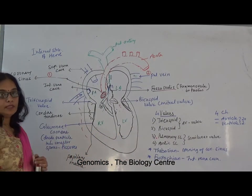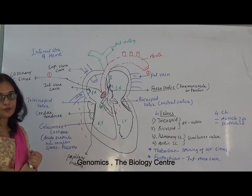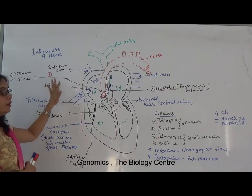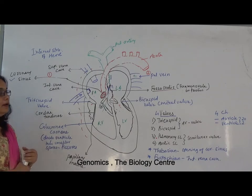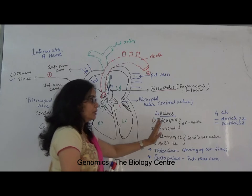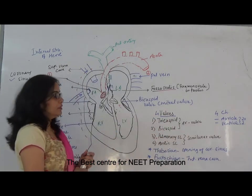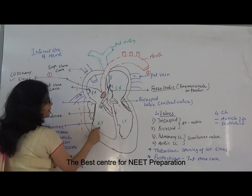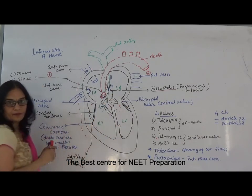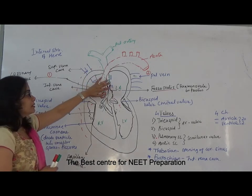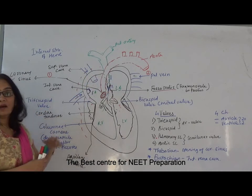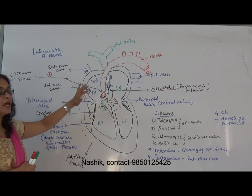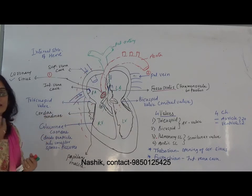In this video we will study the internal structure of the human heart. The human heart is a completely four-chambered heart containing two auricles and two ventricles. The right auricle, left auricle, right ventricle, and left ventricle make up the four chambers. Auricles are the upper chambers and ventricles are the lower chambers. Auricles are called receiving chambers and ventricles are called distributing chambers.